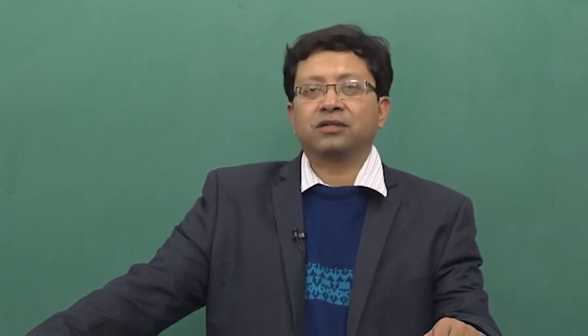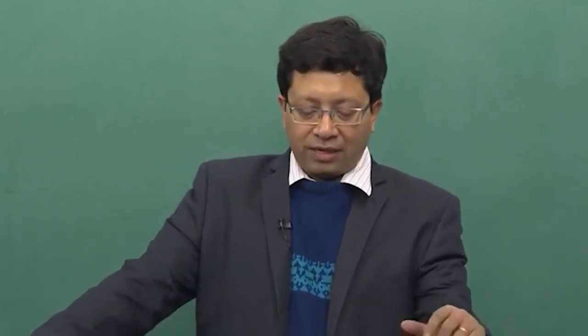We will consider the concept of fixed discounting rate, which is slide number 305. As written in slide 305, a fixed discounting interest rate is a rate where the interest rate does not fluctuate during the fixed rate period of the loan. This allows for accurate prediction of future payments. The concept of variable interest rate is when the interest rate changes depending on the economic conditions.